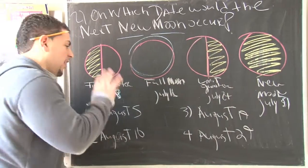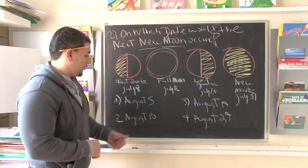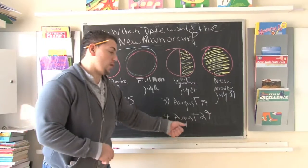Now, key things you want to look at. They give us four choices. They give us August 5th, August 10th, August 19th, August 29th.